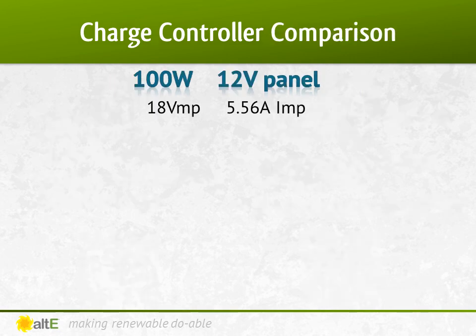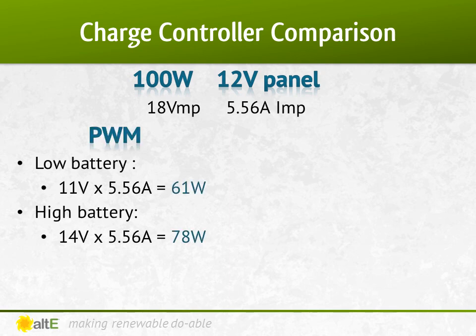Let's see how this affects our system with a 100-watt 12-volt nominal panel with a 12-volt nominal battery bank. We'll do the math assuming 100% efficiency, which isn't what you'll see in the real world, but will really help illustrate the difference between PWM and MPPT clearly. With PWM, when the battery voltage is low — say 11 volts — when the charge controller connects the panel's output to the battery, the solar panel's output is pulled from 18 volts down to 11 volts. With a maximum power current of 5.56 amps, the charge controller's output into the battery is 11 volts times 5.56 amps equals 61 watts.